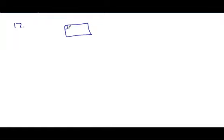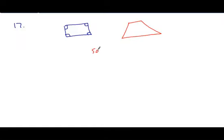Statement 17 says a quadrilateral is a rectangle. We can look to see if we can find an example — here's our example. We also look to see if we can find a counterexample — here's a quadrilateral that is not a rectangle. Because of both the example and the counterexample, this statement is going to be sometimes true.